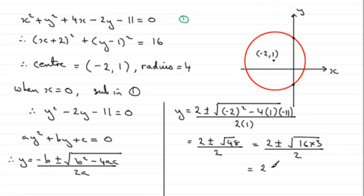So we've got 2 plus or minus square root of 16, which is 4, multiplied by root 3, over 2. So just do that there.